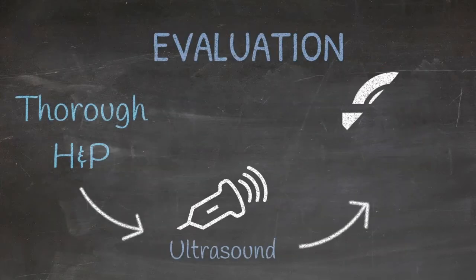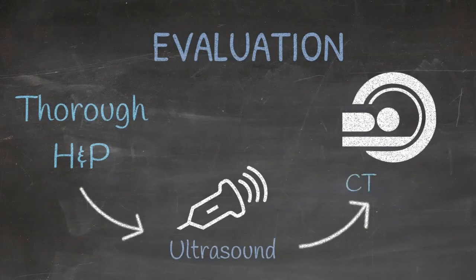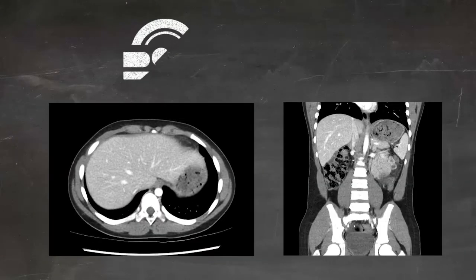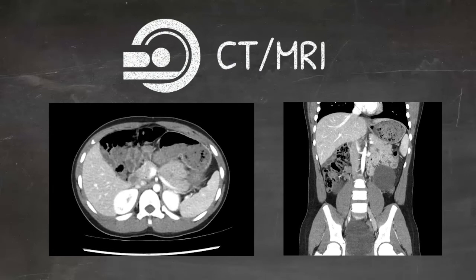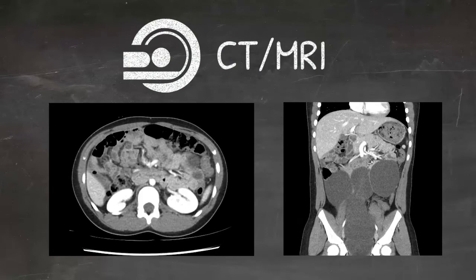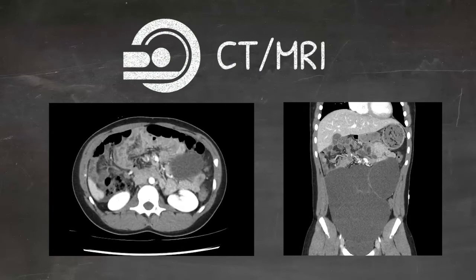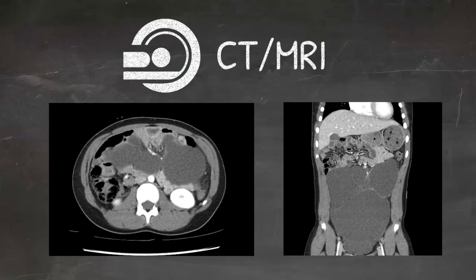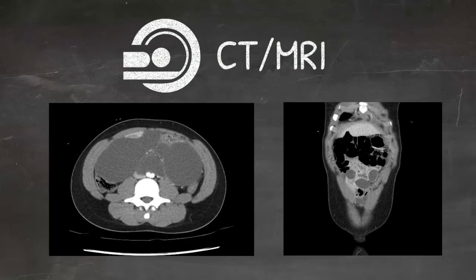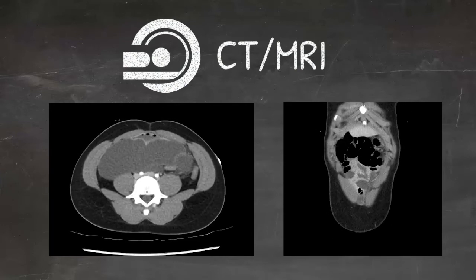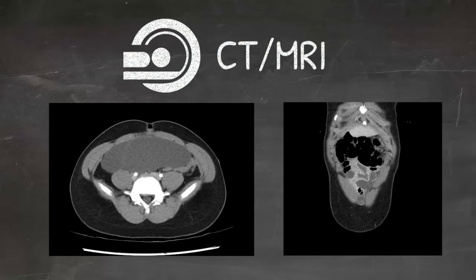Once you've done an ultrasound to get some information about the nature of the cyst and where it might originate, oftentimes patients will go on to get cross-sectional imaging — either a CT with PO and IV contrast, which helps to delineate the mass from the bowel itself, or an MRI, which can be very useful for fat planes and soft tissue.